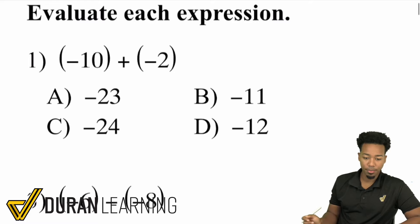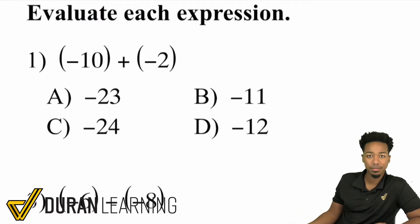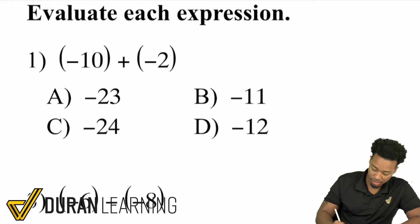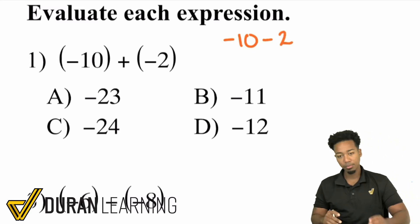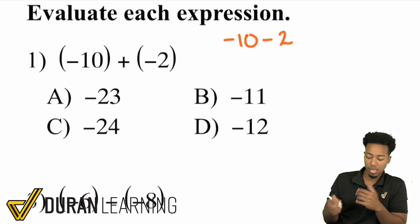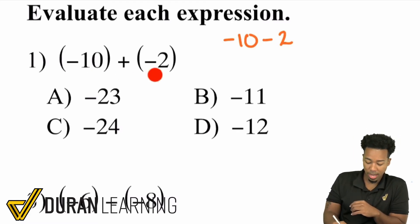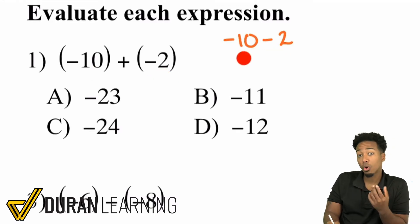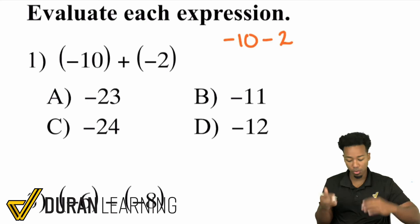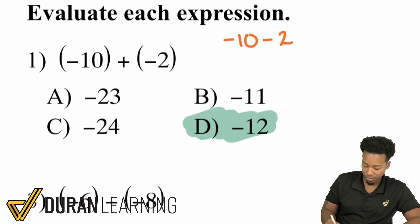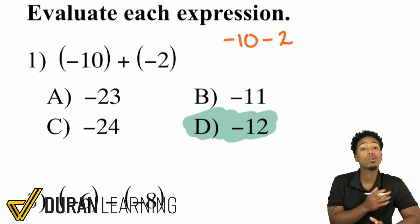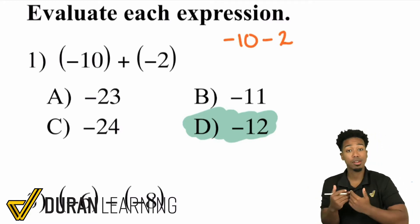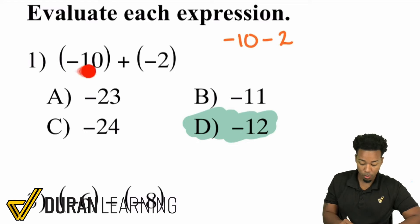Number one: we have negative 10 plus negative 2. Another way to read this is negative 10 minus 2, because adding a negative is the same as subtracting. The way to look at this is: we have a negative 10 and we're adding two more negatives — or we're already at negative 10 and we're taking away two more. So if you're back 10 and take away two more, you are back a total of 12. If you're already negative and you're subtracting, you're getting more negative. So the rule here is just add the numbers and keep it negative.